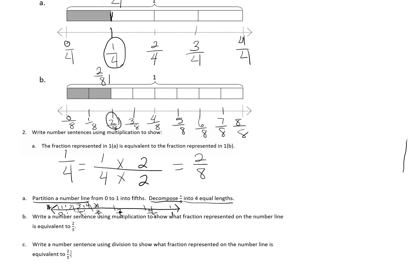For B, they want us to write a number sentence using multiplication to show that what fractions are presented on the number line is equivalent to 2 fifths. It's the same thing that we did up here. I know I'm finding a fraction that is going to be equivalent to 2 fifths using multiplication. So 2 fifths times something is going to be our equivalent fraction. To stay easy, I'm going to multiply it by 2. 2 times 2 equals 4 and 5 times 2 equals 10. So my equivalent fraction is 4 tenths.